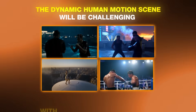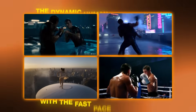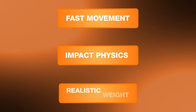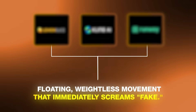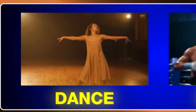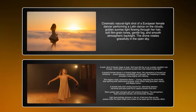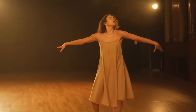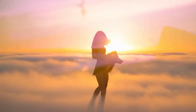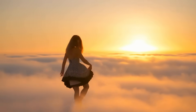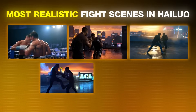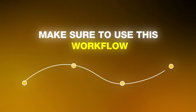While those examples were still quite calming, the dynamic human motion scene is challenging with fast-paced movements — it's probably the toughest type of video to get right. Fast movement impacts physics and realistic weight distribution. Most tools produce floating, weightless movement that immediately screams fake. To test this, I created a dance scene and a boxing scene. For the dance scene, two prompts created these videos, and I'm genuinely impressed by how human-like the movements are. For creating the most realistic fight scenes in HILO, make sure to use this workflow.